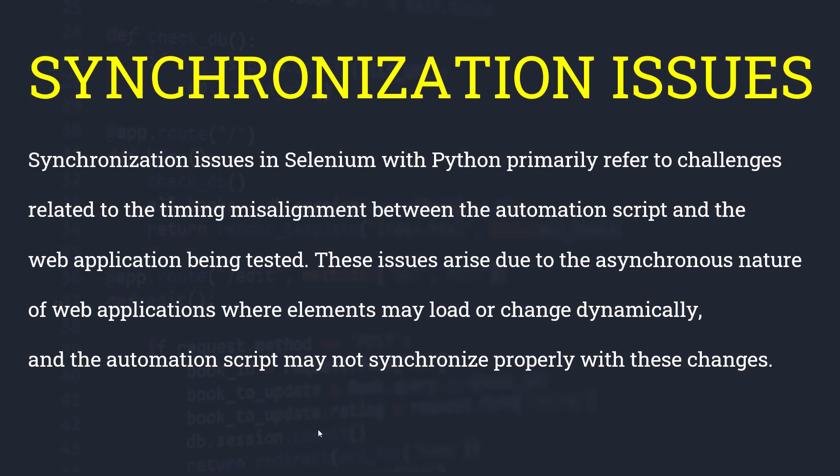Before we dive into the implicit wait we need to understand about the synchronization issues. What are synchronization issues? Basically, when your test script is not synced with your application, if both are not synced you will get exceptions. Your script might be trying to find some element — it may be a button or text prompt — but that button is still not visible or not loaded, and your script will throw an exception saying it is unable to find this button.